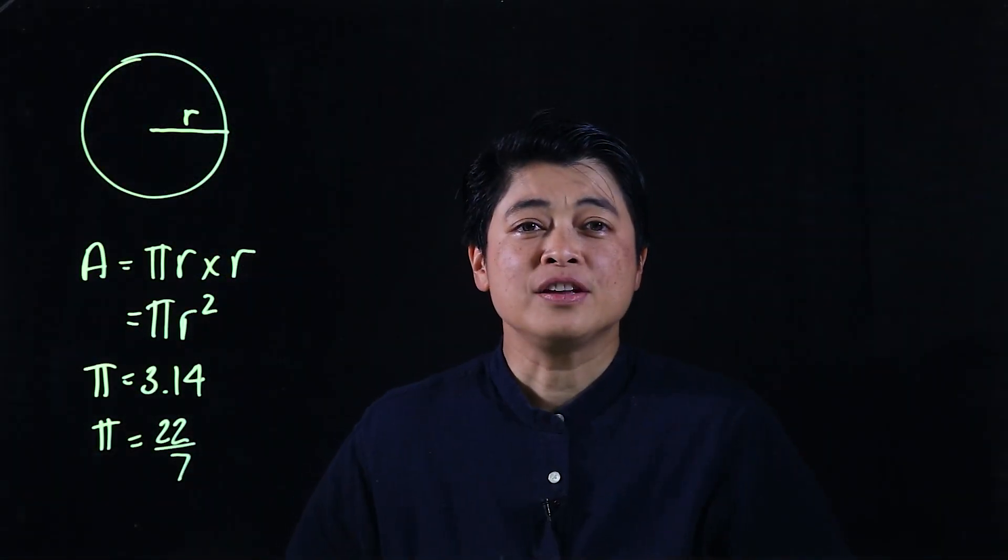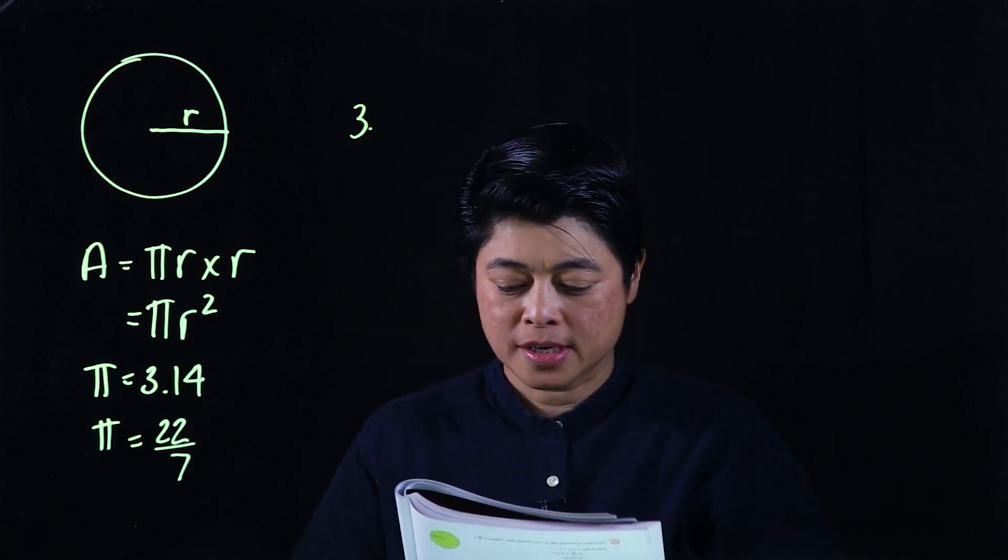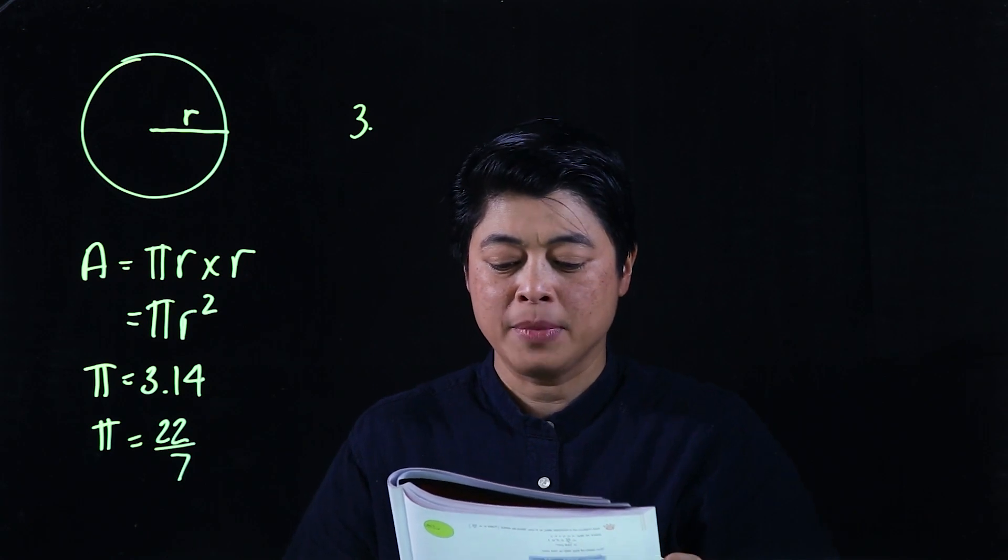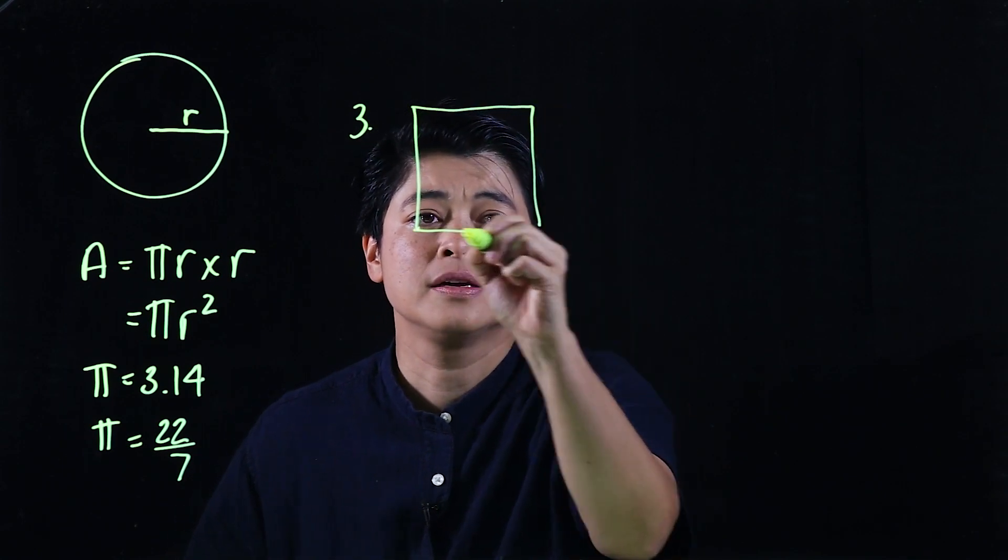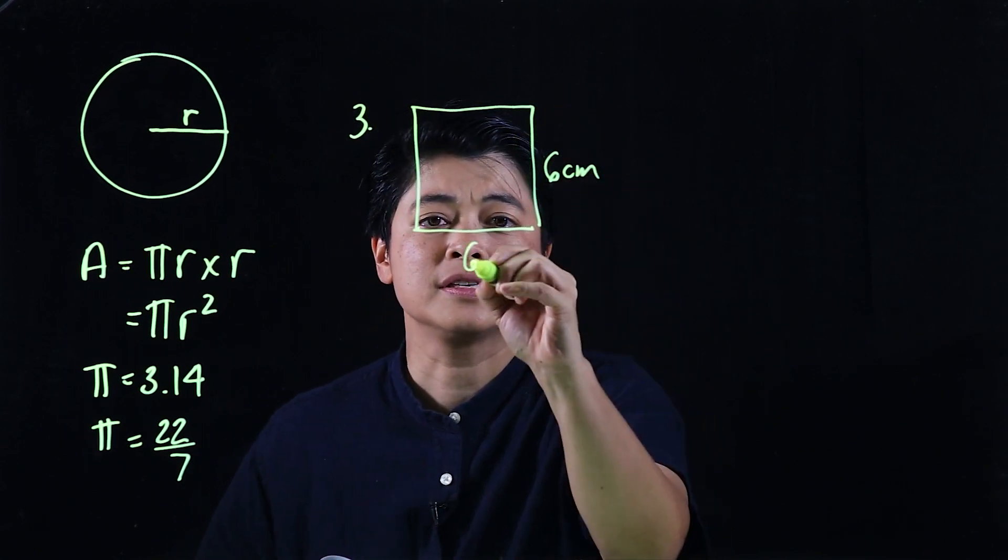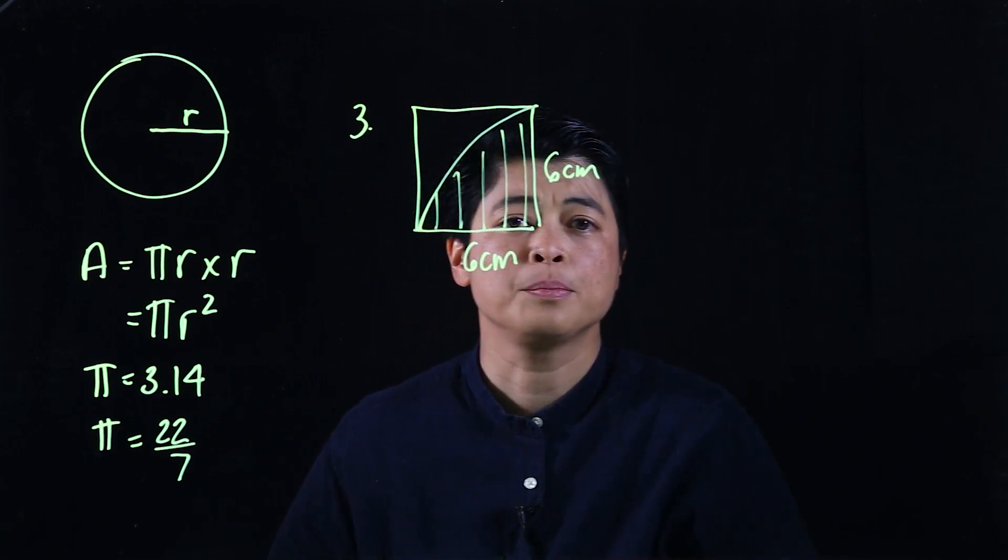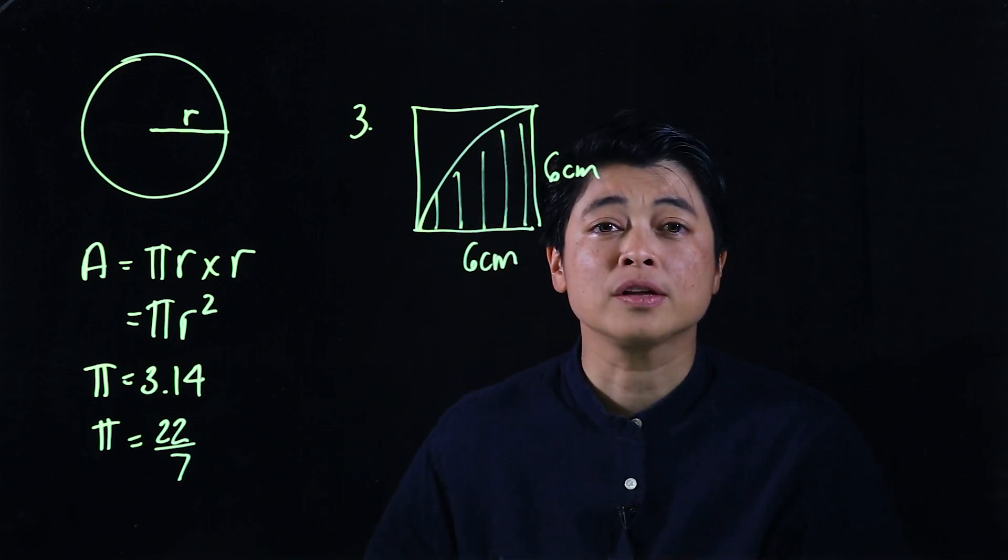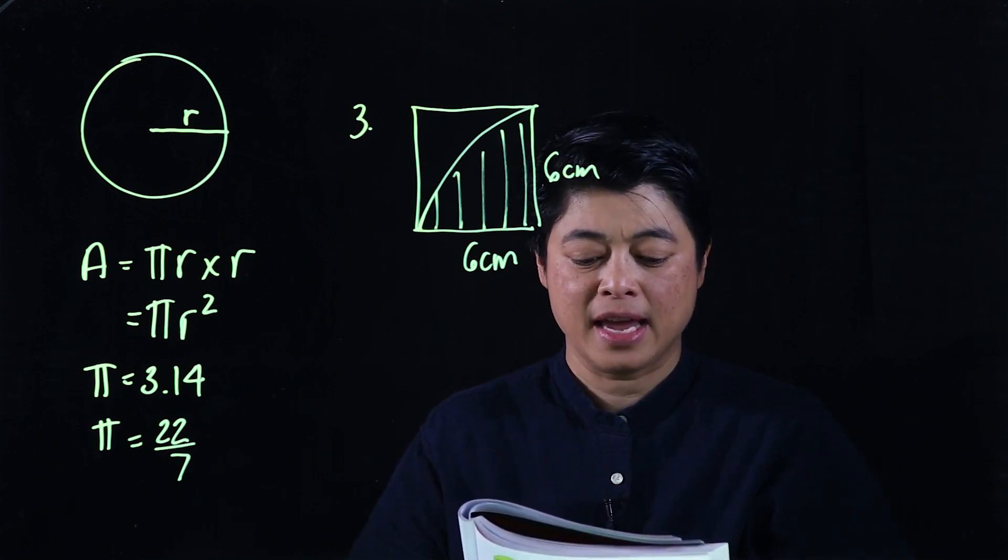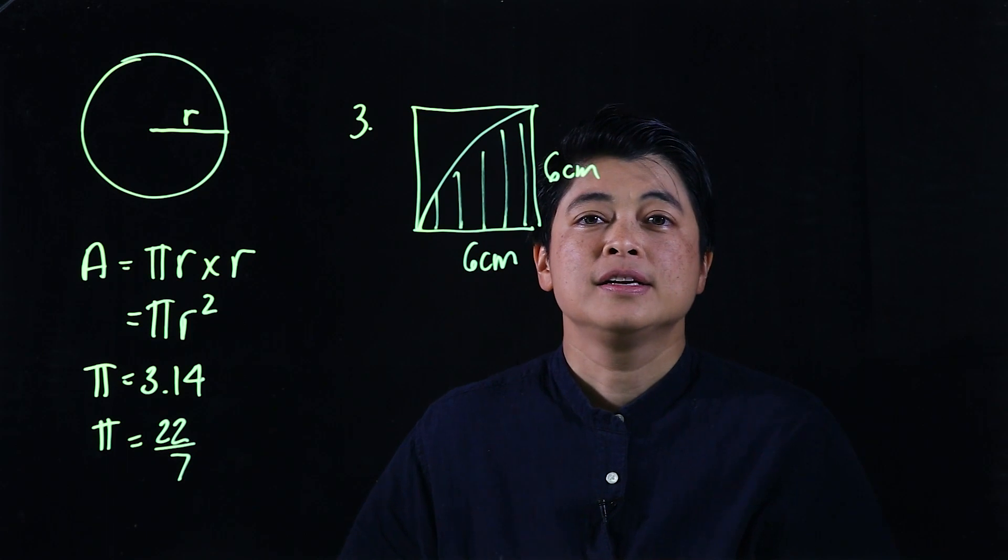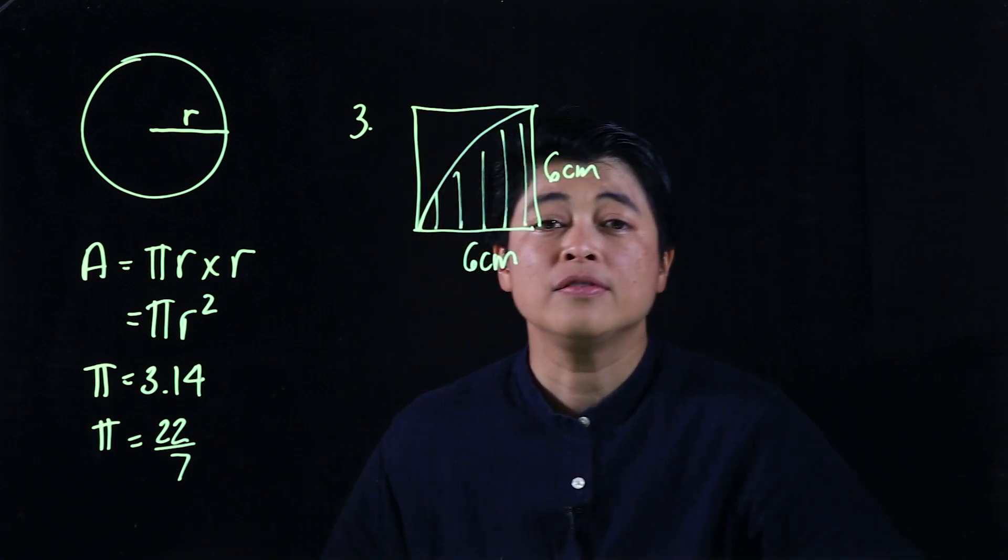Continuing on to page 151, problem number three says a quarter circle is cut out from a square with sides six centimeters. So you have a square, this is six centimeters and this is six centimeters, so here's your quarter circle. So again from previous learnings, a quarter means one fourth.